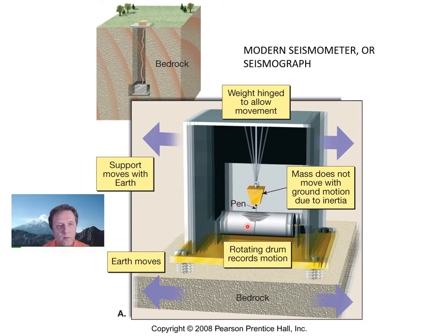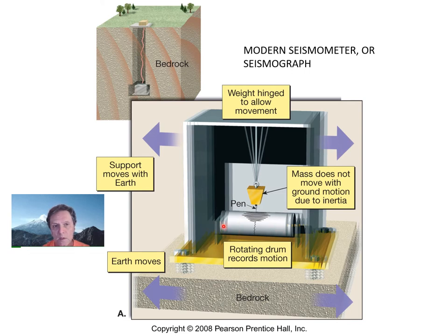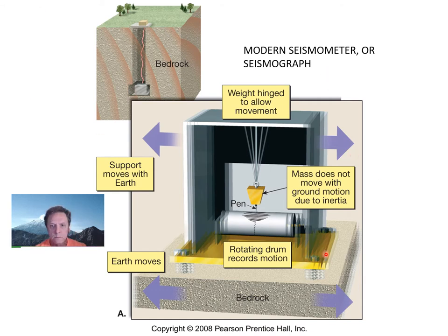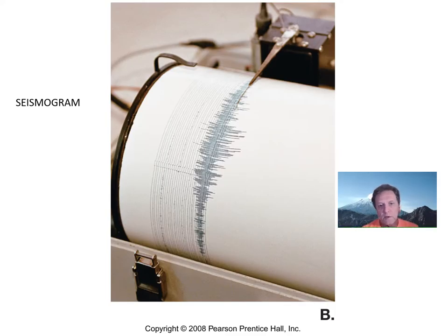A modern seismograph has a drum with paper rolled around it. As the earthquake occurs, the box shakes back and forth, and the wire moves back and forth, but the mass — the weight — does not move because of inertia. This moves the roll of paper back and forth and rotates it, giving us a recording of seismic waves called a seismogram.